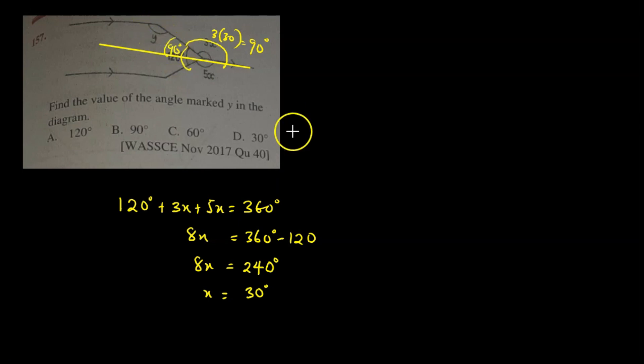Proceeding to find the value of y, it means the angle 90 degrees and the value of y are co-interior angles. Therefore y plus 90 degrees must be equal to 180 degrees because co-interior angles add up to 180 degrees. Therefore the value of y will also be equal to 180 minus 90 degrees, which gives us y as 90 degrees.